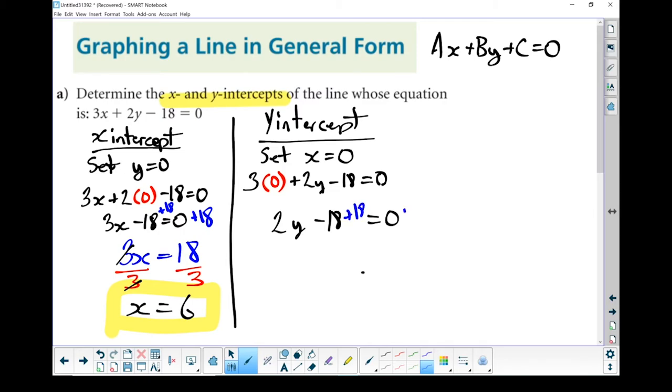So I'm going to go plus 18 plus 18. What that leaves me with is 2y equals... 18s cancel each other out on the left-hand side. And on the right-hand side, I've got 18.